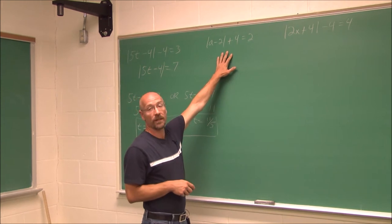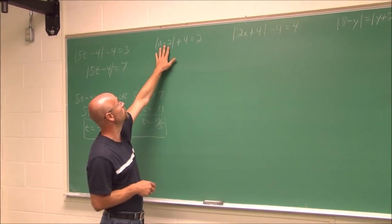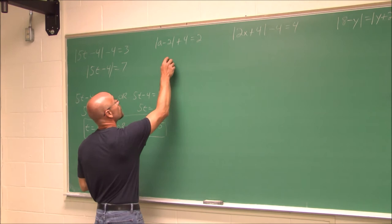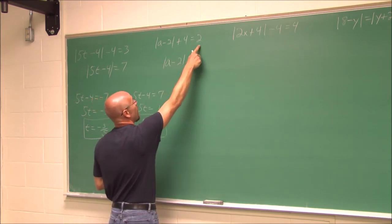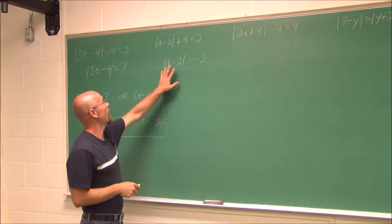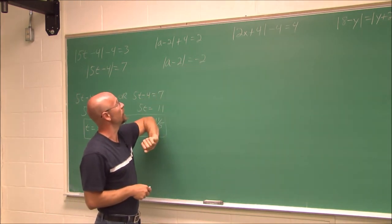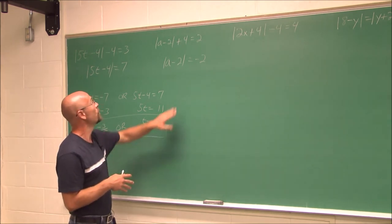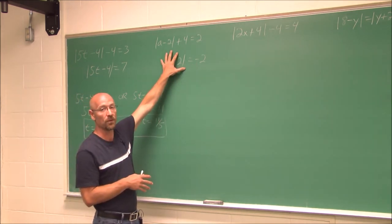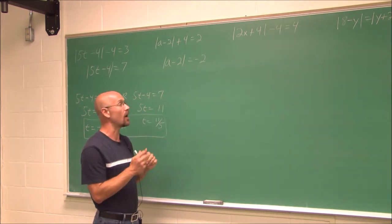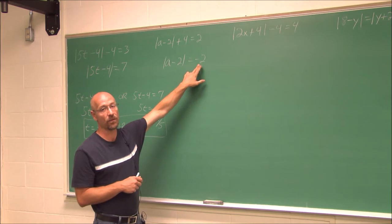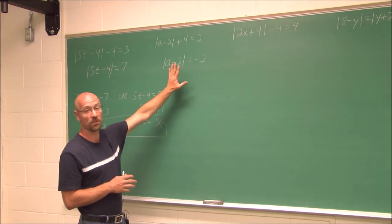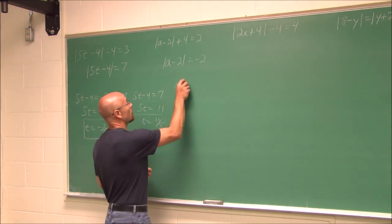Now we have the absolute value of a minus 2 plus 4 equals 2. First, isolate the absolute value by subtracting 4 from both sides, giving the absolute value of a minus 2 equals negative 2. We should recognize right now that an absolute value is a distance and can never be negative — distances are always positive. So this does not have a real solution, and we write: no solution.